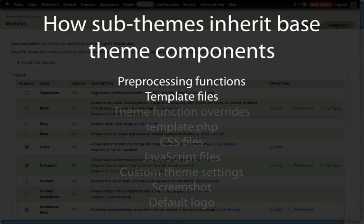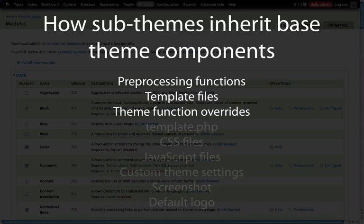In contrast, when working with a template file, we can override a template file defined in our base theme by simply creating the template file inside of our sub-theme. For example, if we wanted to override our page template file, we would simply create a new page.tpl.php file inside of our sub-theme. Theme function overrides work in a similar way — we can recreate that function inside of our template.php file in the sub-theme to override it, completely replacing the base theme settings rather than stacking them.